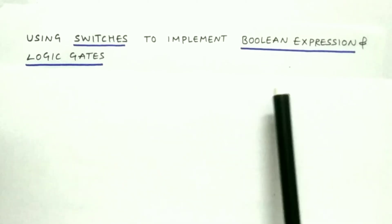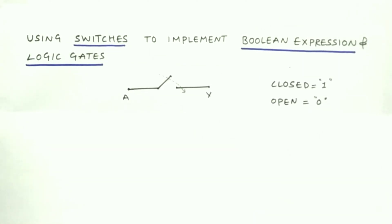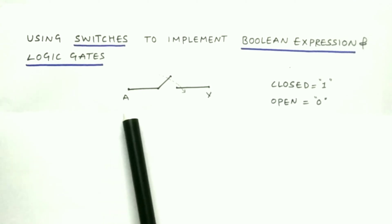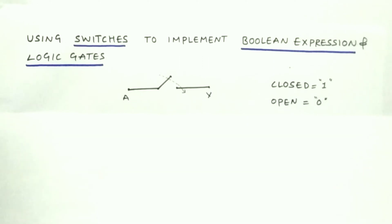A switch is represented as shown here — we are connecting two terminals A and Y with a switch in between. When the switch is closed, the current can flow from A to Y, and when the switch is open, the current will not flow. Using switches, we are going to implement boolean expressions and logic gates.